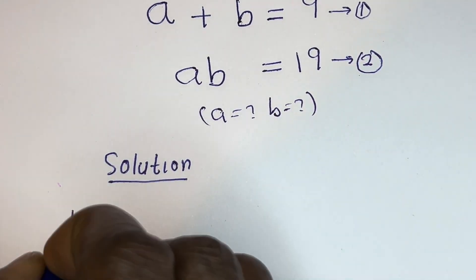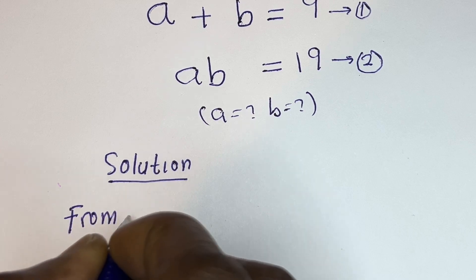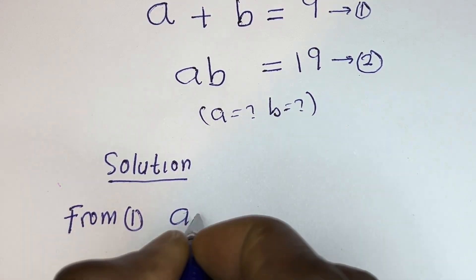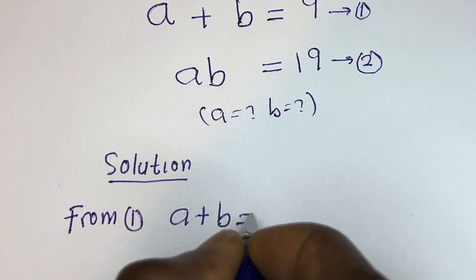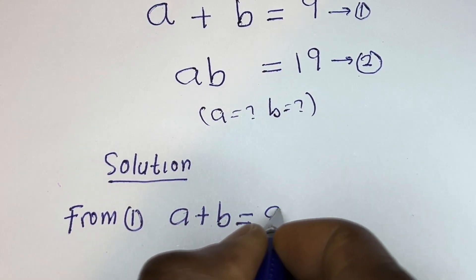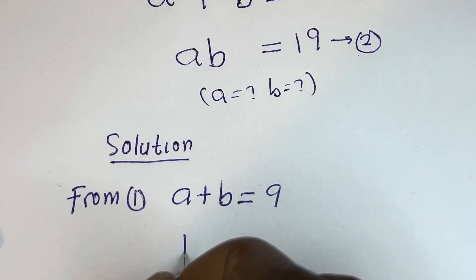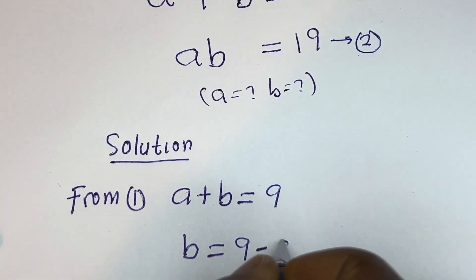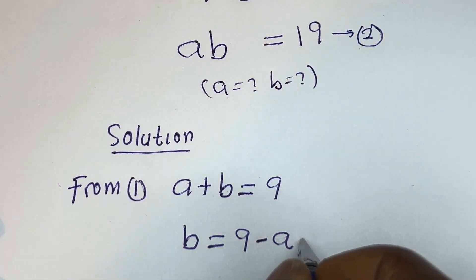We have a plus b is equal to 9 — let's call this equation 1. Then ab is equal to 19 — let's call this equation 2. From equation 1, b is equal to 9 minus a; let's call this equation 3.